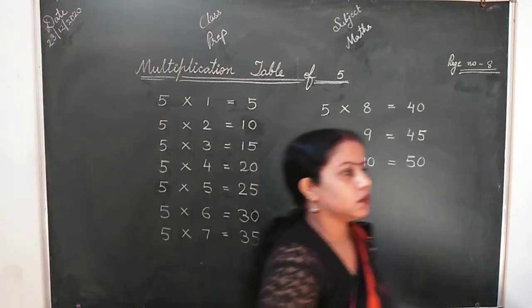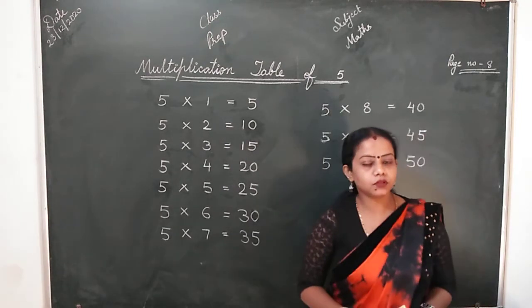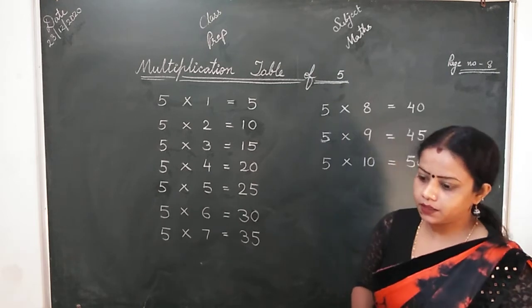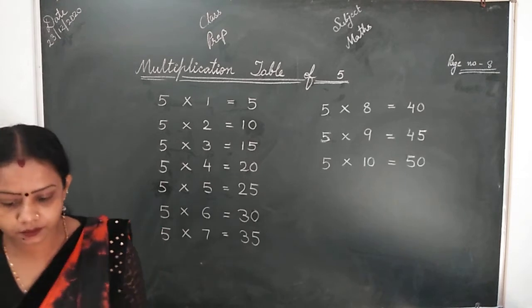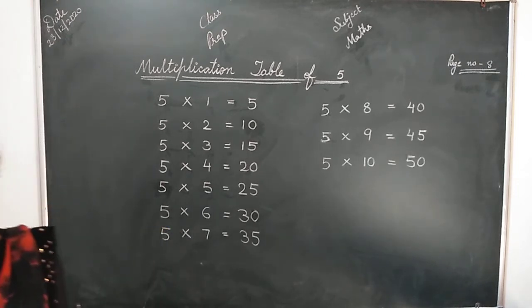Isse pehle hum ne multiplication table of 2, 3 and 4 learn ki thi. Written practice bhi ki thi. Aaj hum 5 ki table learn karenge. So let's start our table.